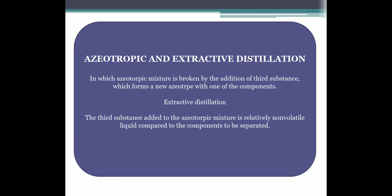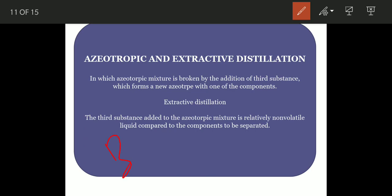Now for a good example: benzene is added to the azeotropic mixture of water and ethyl alcohol. When you add benzene to the azeotropic mixture of water and ethyl alcohol, the benzene breaks the water-ethyl alcohol azeotrope and forms a new azeotrope between benzene and ethyl alcohol. The volatility of water is enhanced.